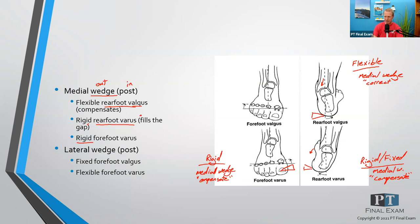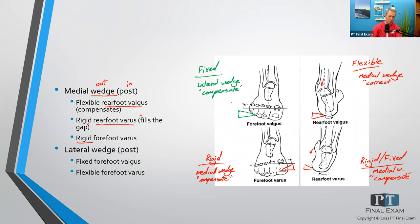Now let's talk about some lateral wedging. In the case of a fixed forefoot valgus, we're going to place a lateral wedge for the same reason — we will fill the space with a lateral wedge to compensate. Otherwise you'd have uneven wear on your metatarsal heads and you wouldn't be pushing off properly off all of the metatarsal heads — you'd have uneven wear on the first and second metatarsal heads.